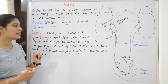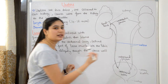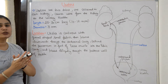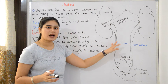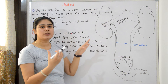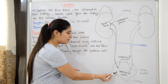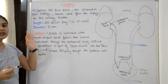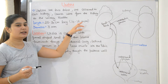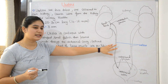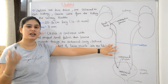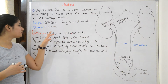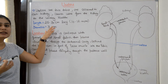One ureter is attached to each kidney. It carries urine from the kidney to the urinary bladder. The length of the ureter is 25 to 30 cm in an adult human, or 10 to 12 inches, and the diameter is 3 mm.